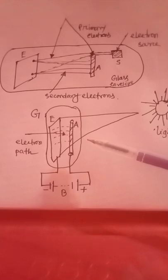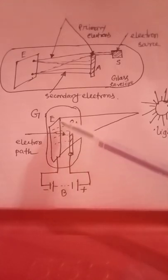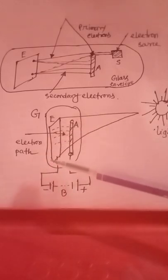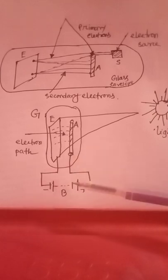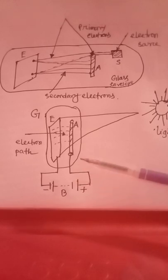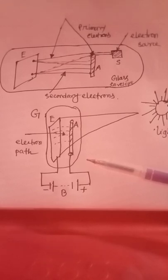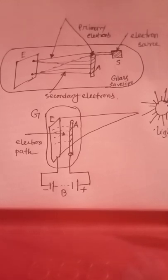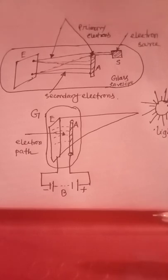The anode contributes to the flow of current as energy comes in from the battery. This current may be measured by connecting a sensitive galvanometer in the anode circuit. The effects of secondary emission are very undesirable in many electronic devices. For example, in a tetrode tube, secondary emission is responsible for a negative resistance effect. However, secondary emission effects are utilized in electron multipliers and cathode ray tubes.